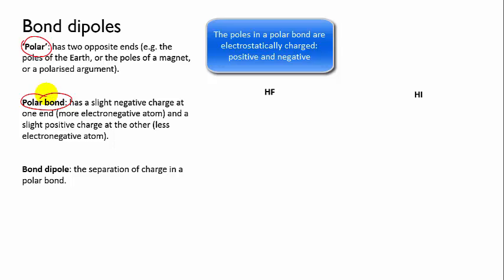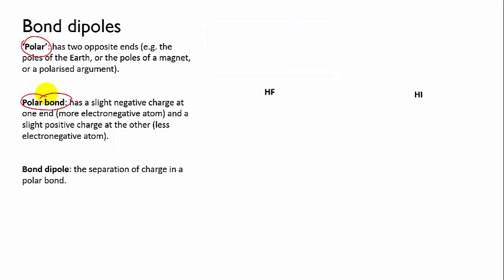A polar bond is a bond that has a slight separation of charge. By this I mean that there's a small excess of negative electrostatic charge at one end, that's where the greater electron density is, and a small excess of positive electrostatic charge at the other end. These two ends represent the two poles of the polar bond, and we can also refer to them as the bond dipole, which is just a fancy way of saying it has two opposite ends.